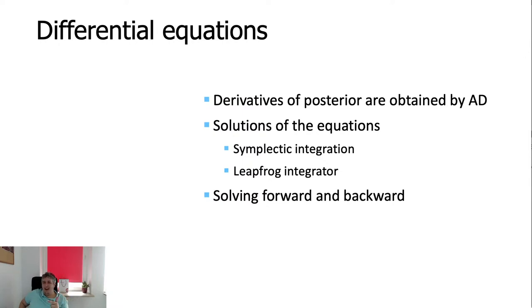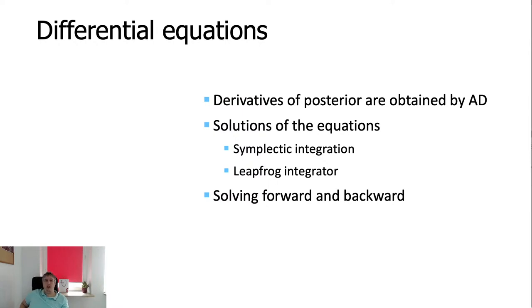Our equation either numerically destabilizes or numerically contracts — either way is bad, because we want to preserve the Hamiltonian property so our equations stay on the Hamiltonian curves we are interested in and the samples are reasonable. One class of methods very useful for this is so-called symplectic integrators, which are a special class of differential equation solvers that preserve the Hamiltonian and its first integrals. They keep the Hamiltonian in a very reasonable balance. The issue is that symplectic integrators are usually implicit methods, meaning we would need to numerically solve a system of nonlinear equations.